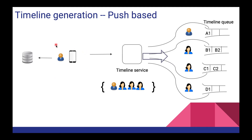Whenever a user posts a story, media, image, or anything, his responsibility is to go and push that post into all his followers' timeline queues. So whenever that user loads his timeline, all he has to do is fetch the recent post from his timeline queue. In this case, we only make calls whenever the user is posting something, so we are saving on a lot of those wasted calls we saw in the previous case. This is actually a good approach — the push-based approach.